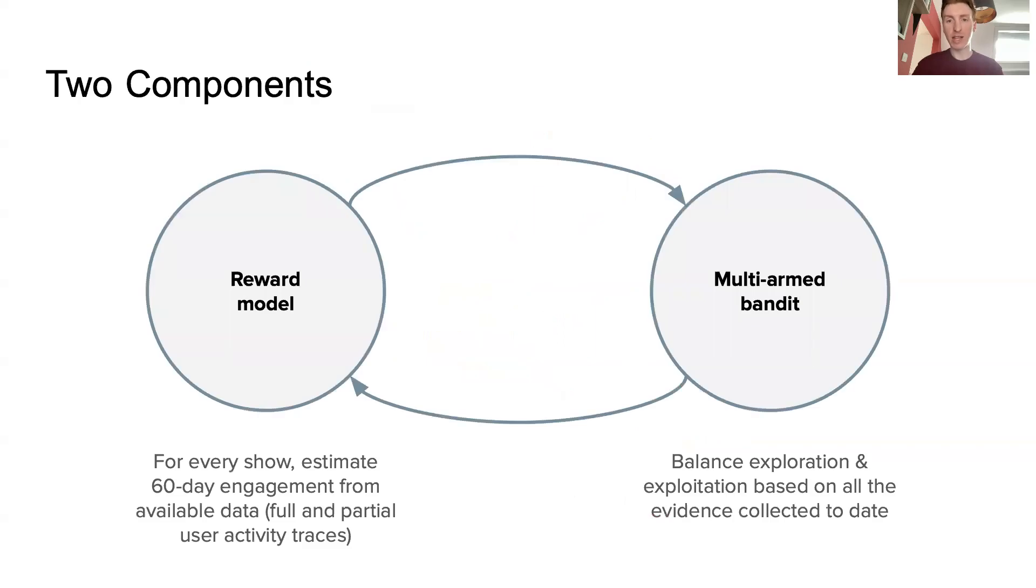As previously mentioned, we optimize for a long-term metric called stickiness, which is the number of times a user listens to a show in the two months following initial engagement. For our reward model, we use Bayesian filtering to iteratively update probabilistic beliefs over the stickiness of each show.